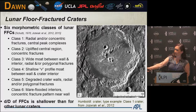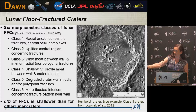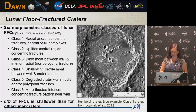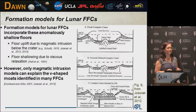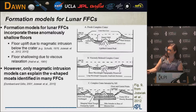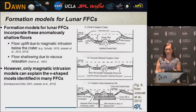It's such an original name, and there are six different classes of these craters, with some of these classes having subclasses. I'm going to focus on class ones with radial and concentric fractures and central peak-complexes, and class fours which have these shallow V-profile moats between the wall and the crater interior. These have a formation model of magmatism beneath the crater forming the fractures — floor uplift due to magmatic intrusion below the crater. An alternate hypothesis was floor shallowing due to viscous relaxation, but a study showed that only magmatic intrusion could explain the V-shaped moats. So currently the magmatic model is the preferred model.